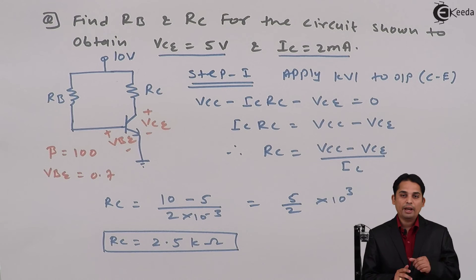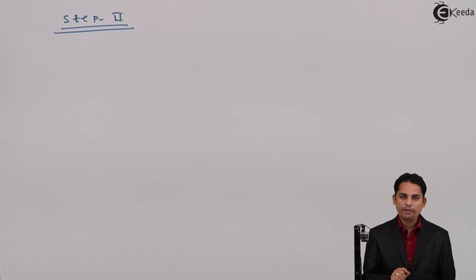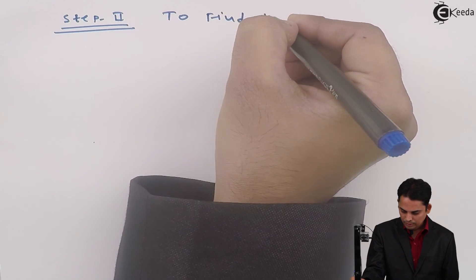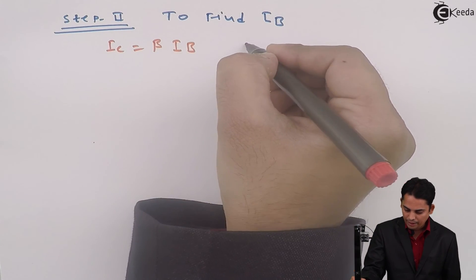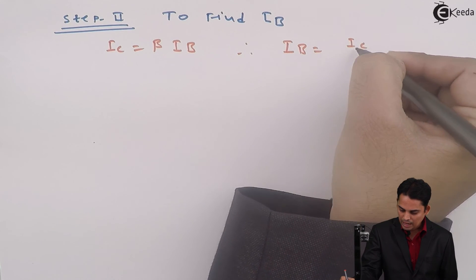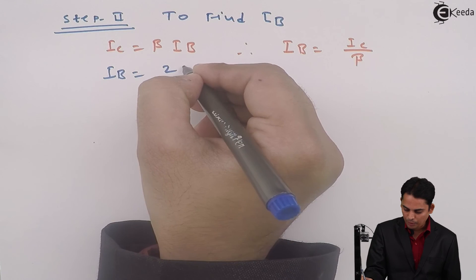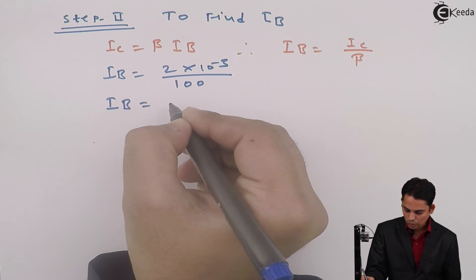This is how from the first step we have got one unknown, which was RC. Now the next step is to find out the value of base resistor RB. Before going for any analysis or KVL, let's first find out IB. We know that IC = β·IB, and hence IB = IC / β. So the value of IB is 2 mA / 100 = 20 microamperes.